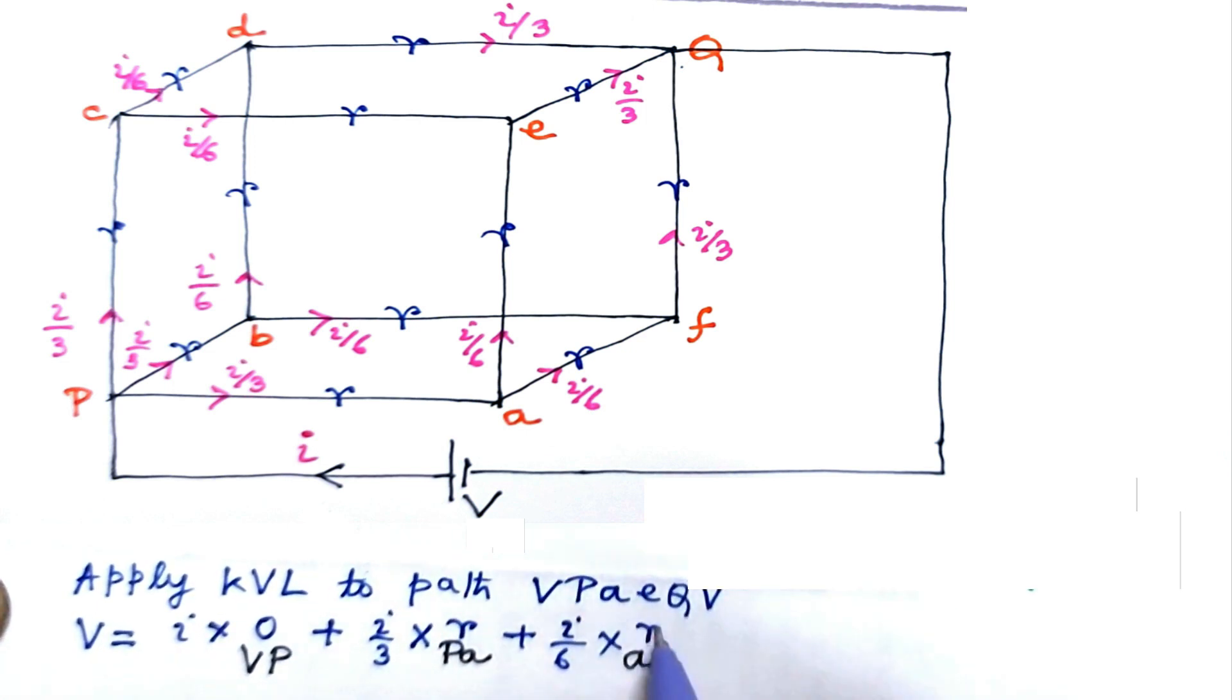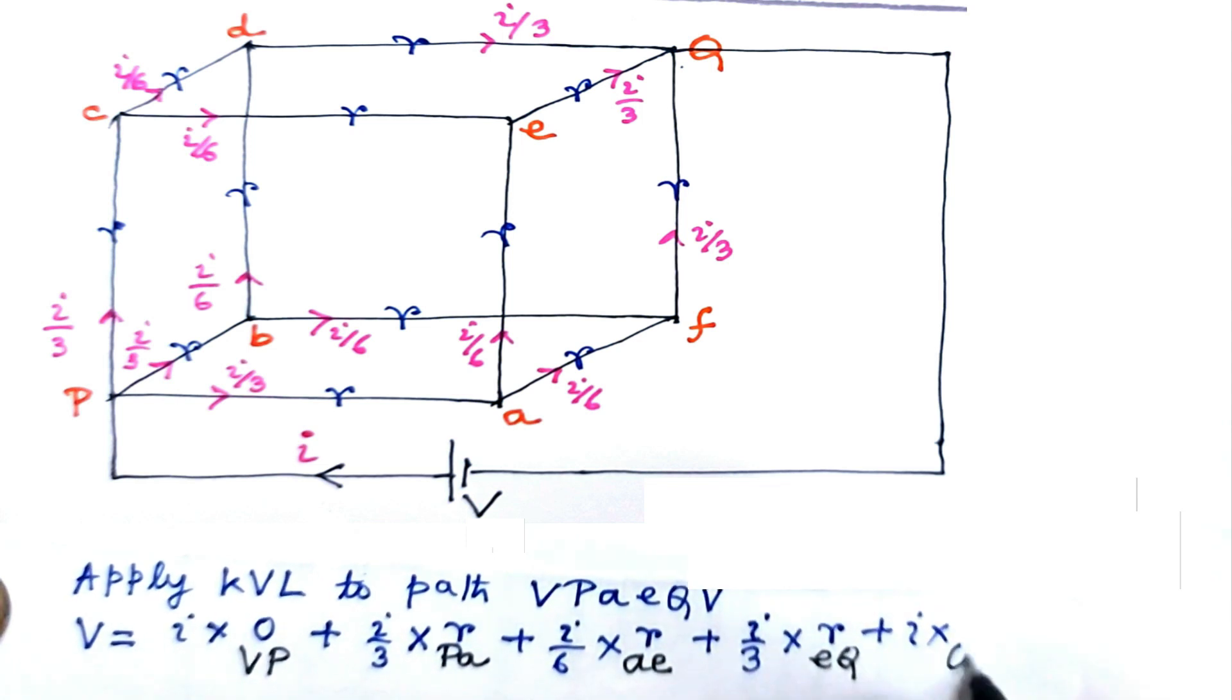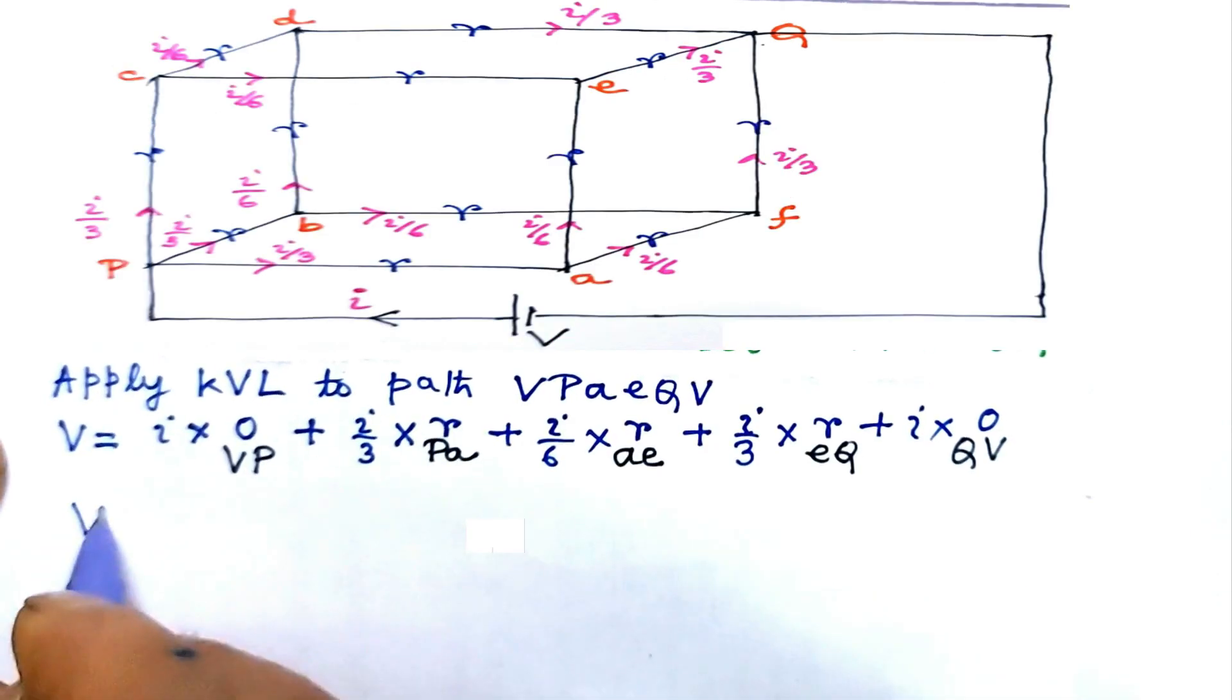i by 3 into resistance along eq which is r, plus i into resistance along qv which is 0. So v equal to...